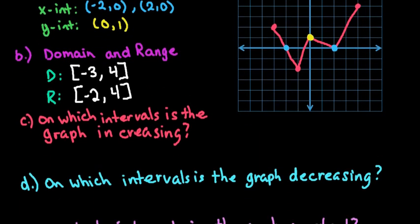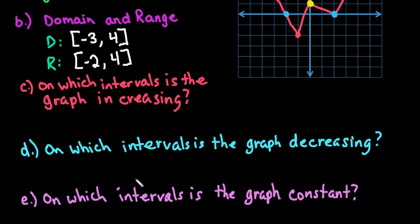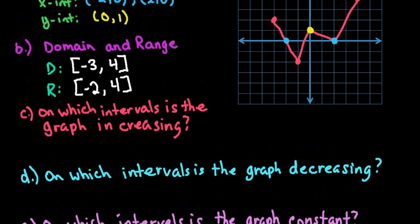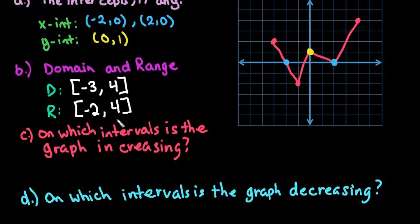When you're reporting the next three, on which interval is the graph increasing, decreasing, and constant, what you do is you record the x-coordinates only because we want to know for what x-coordinates is y increasing.